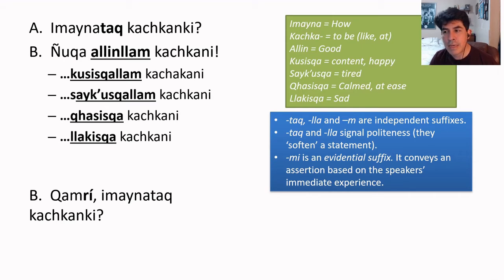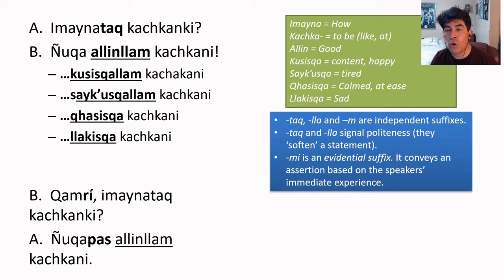So kamri imaynatah kashanki. When you say kamri, imaynatah kashanki, you are asking that person, and you, how are you? And that person is going to say, or that person can say nyoka pas al yin liam kashani. I am well too, or me too, I'm just fine, I'm just good.